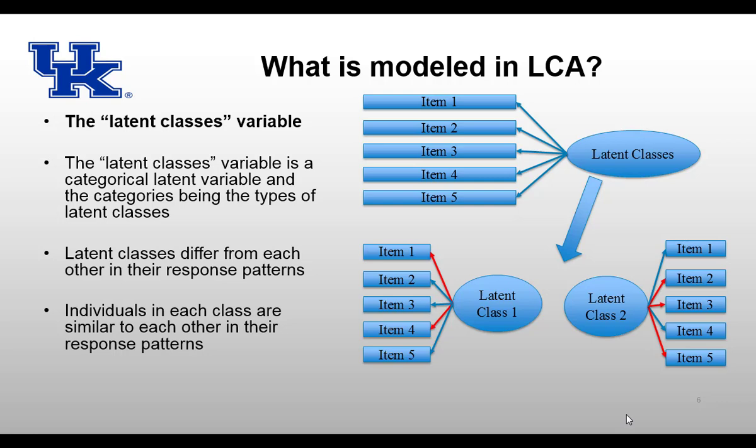Now, what is modeled in LCA? There is only one single variable modeled in LCA — it's called the latent classes variable, which is a categorical variable. The categories in the latent class are the types of classes. Using five items to model an LCA, we might identify two categories: latent class 1 and latent class 2. Students in latent class 1 have high probability of endorsing items 1 and 4, but low probability of endorsing items 2, 3, and 5. Students in latent class 2 have high probability of endorsing items 2, 3, and 5, but low probability of endorsing items 1 and 4.